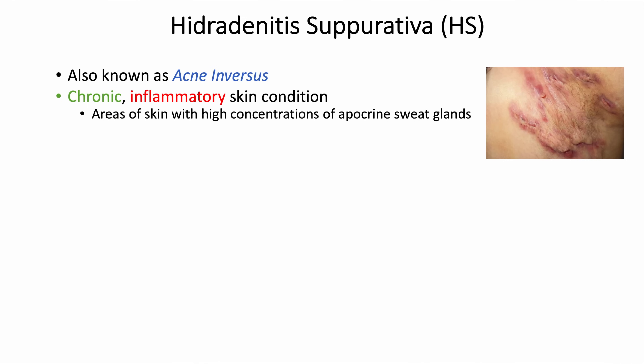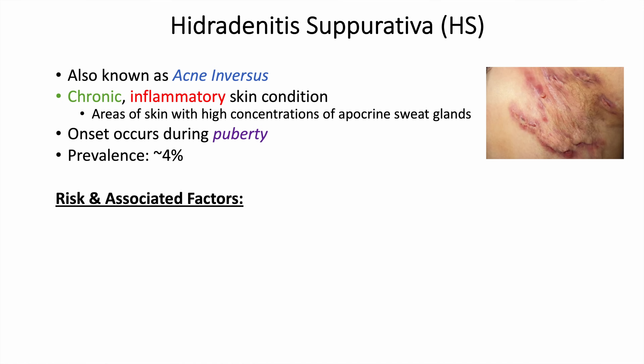Areas of the skin that are affected are often in areas where there are high concentrations of apocrine sweat glands. Apocrine sweat glands can be found in places like the armpits. The onset of this condition generally occurs during puberty, and the prevalence in the general population is about 4%.